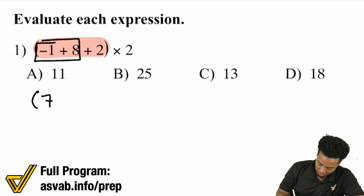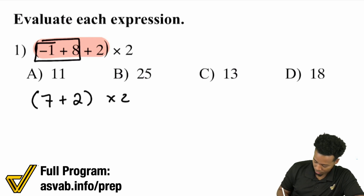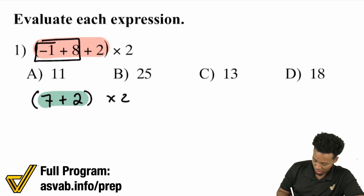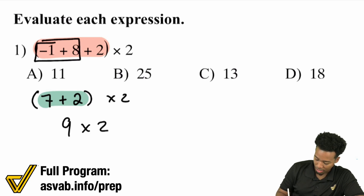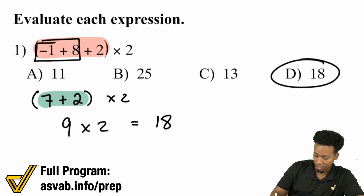So we have seven, still plus that two, times two. Seven plus two is nine, and nine times two — that's going to be 18.